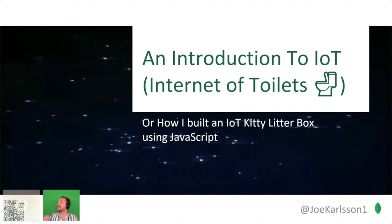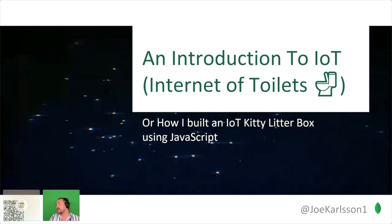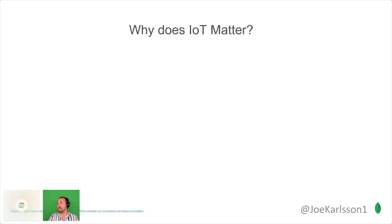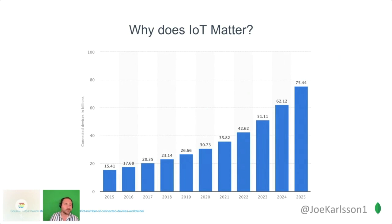This is an introduction to IoT, or the Internet of Toilets, or in other words, how I built an Internet-connected kitty litter box using JavaScript in my free time. Why does this matter? Why are y'all here? Did you know IoT is kind of a big deal? We're seeing more and more devices get integrated every single year, and more ways to program them. I'm sure some of you have an Alexa or Google Home or a smartwatch.